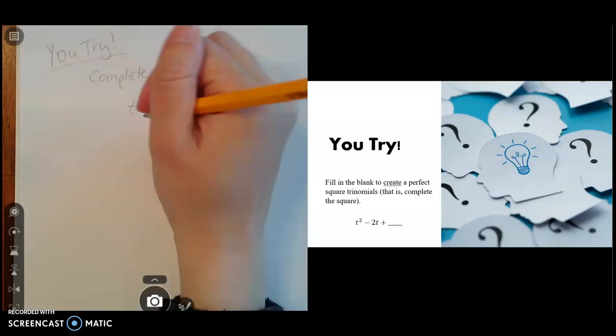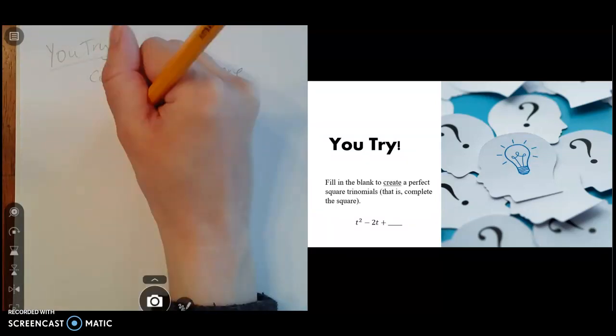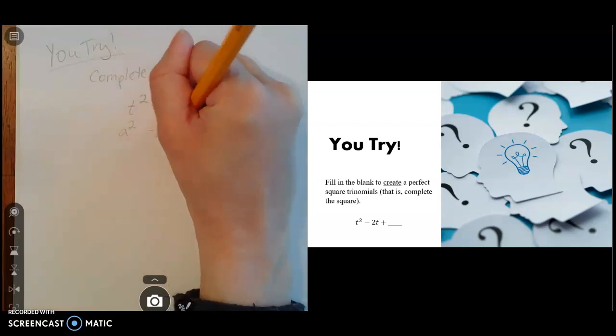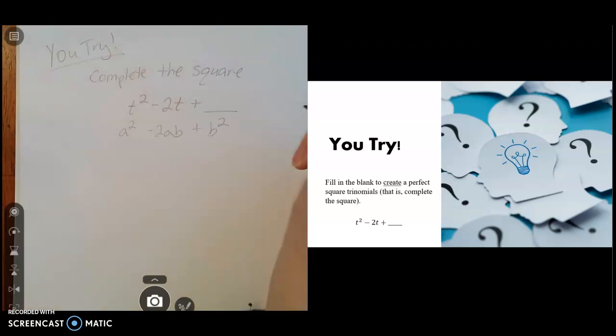So remember our general format for a perfect square trinomial has an a squared minus 2ab plus b squared.